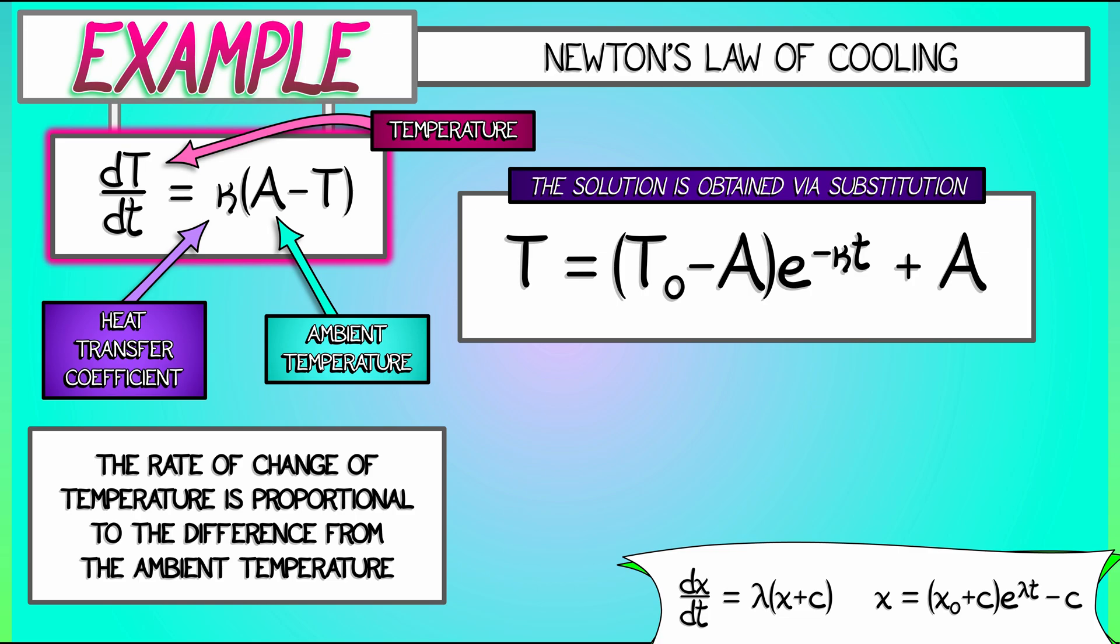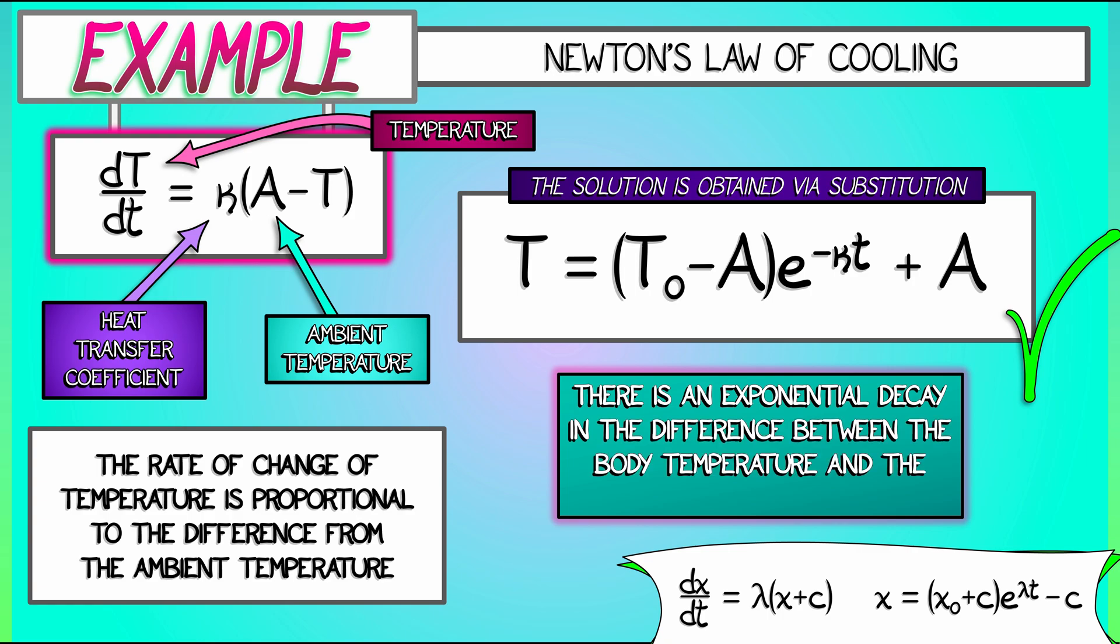And you can check that out. T equals zero, you get the initial temperature. T goes to infinity, you get the ambient temperature. Your coffee has cooled off. All right, then. That's Newton's law of cooling.